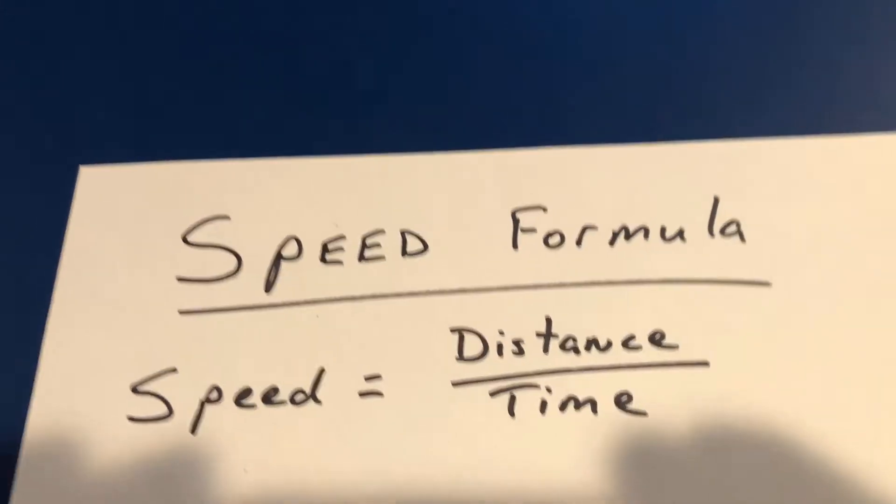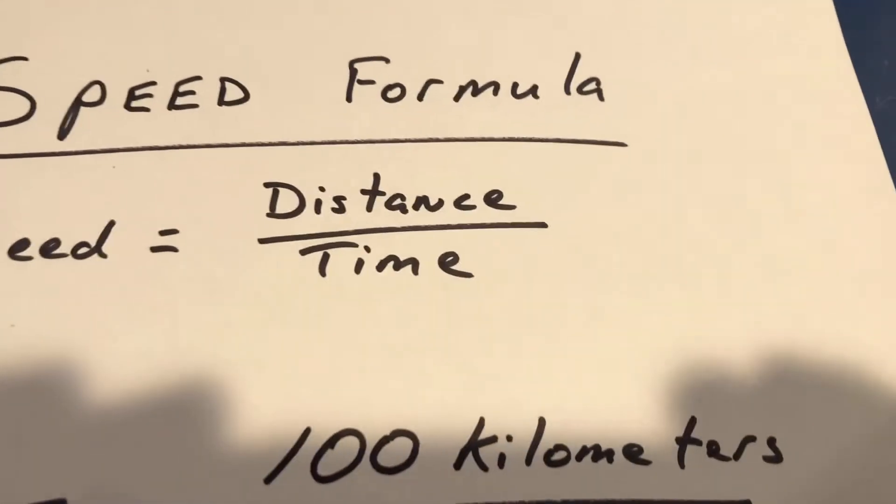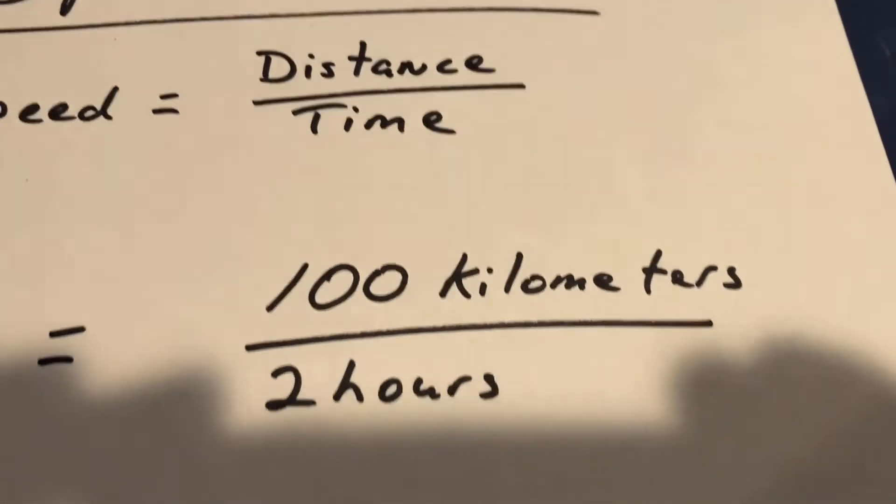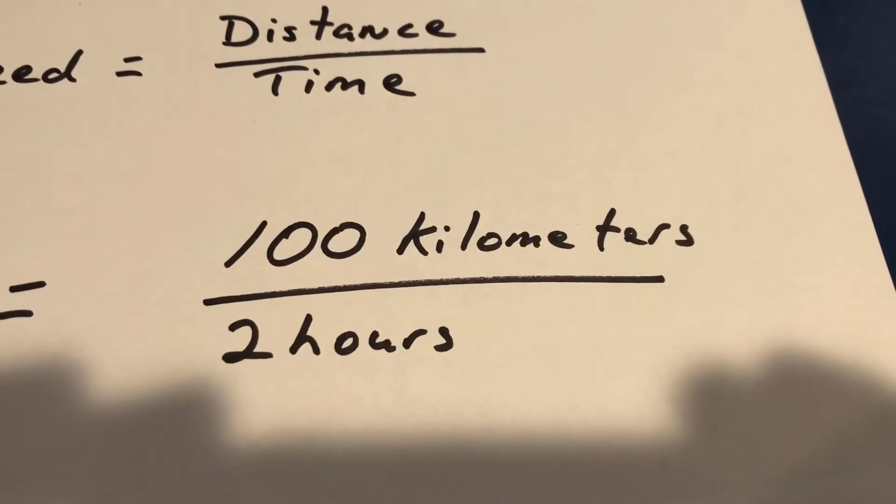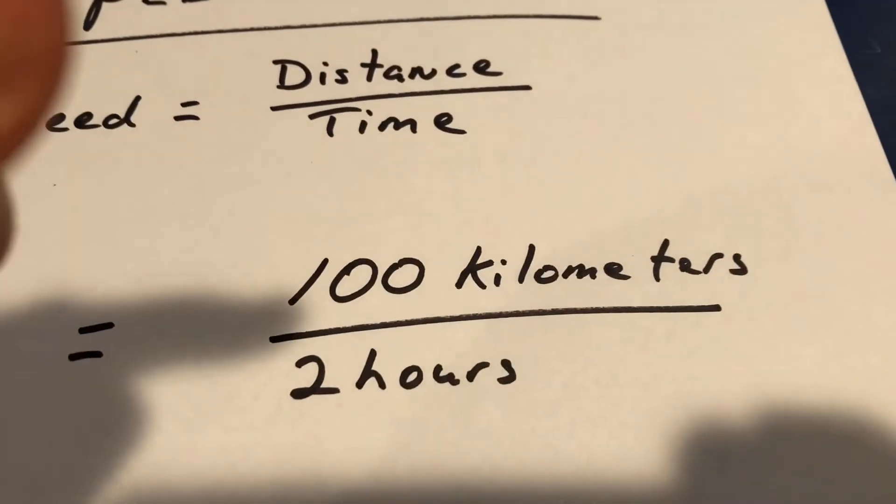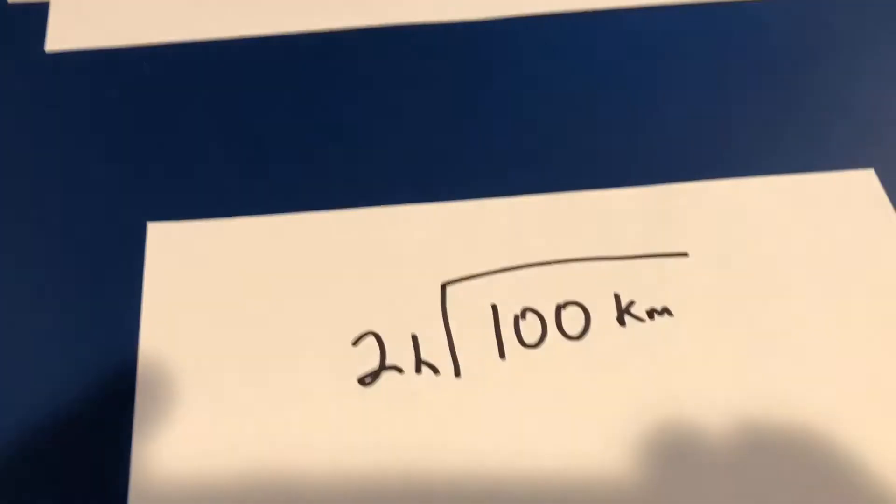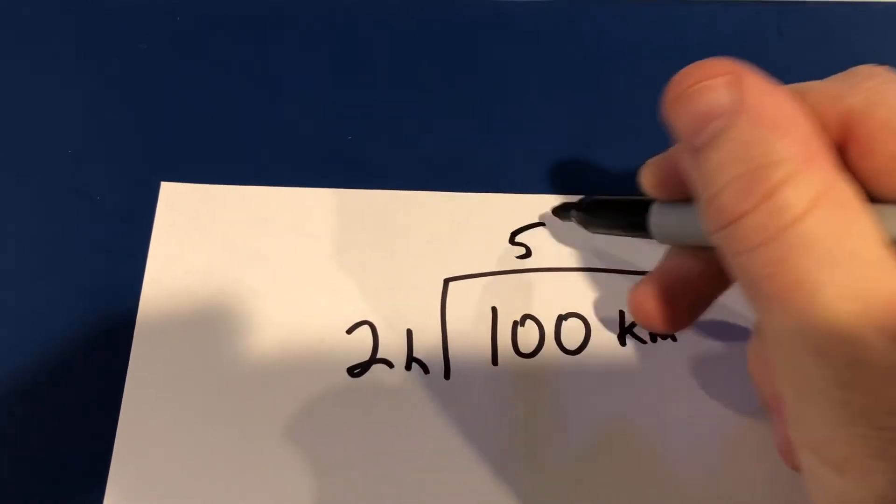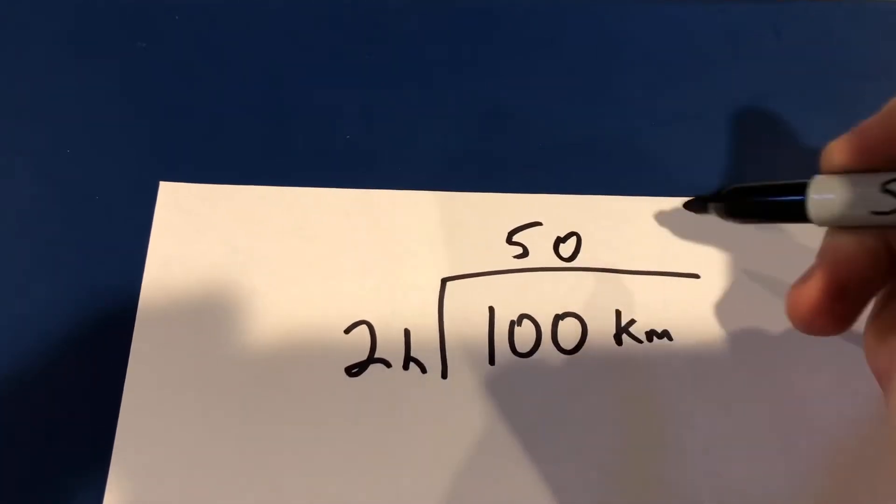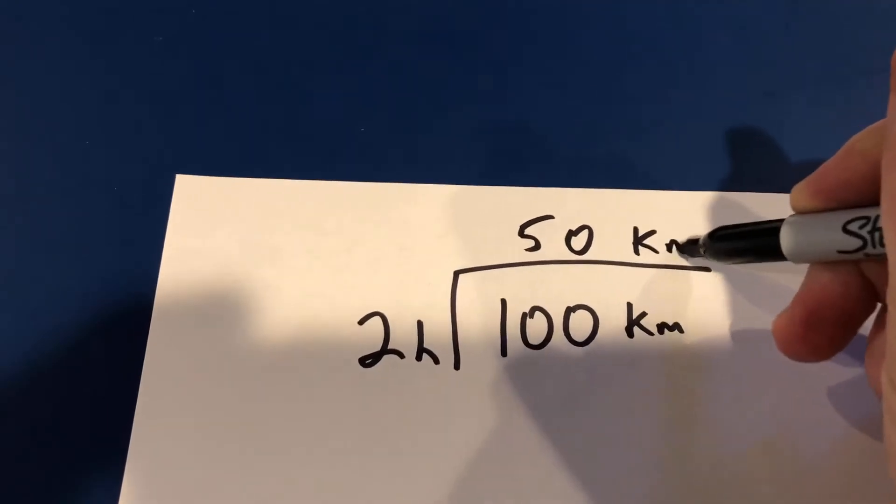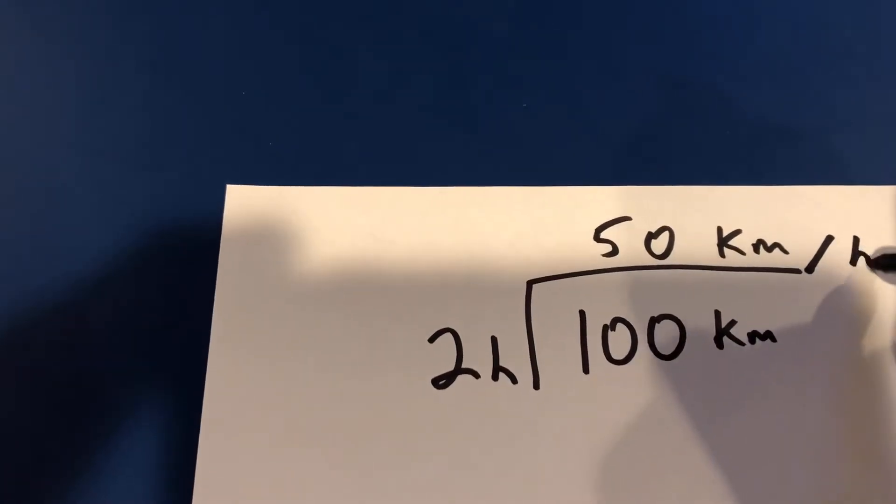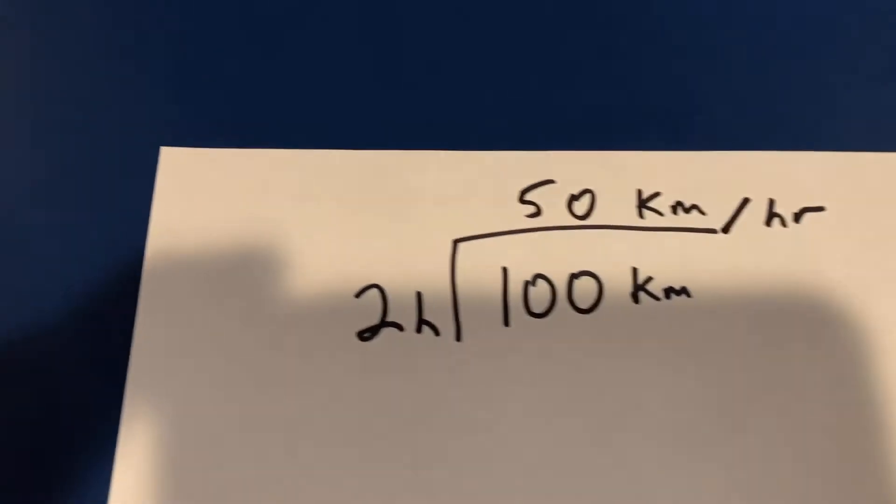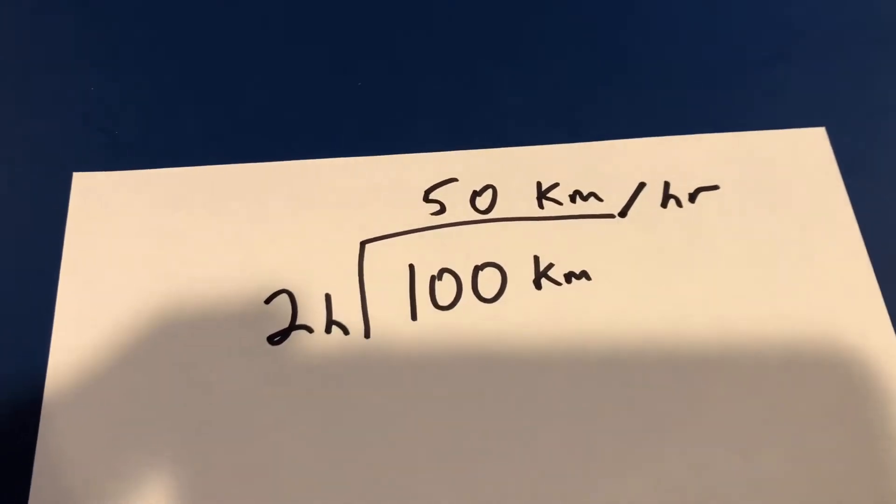So let's look at an example. Let's say I travel 100 kilometers in 2 hours. I just divide 100 by 2. 2 goes into 10 five times. No remainder. 50 kilometers per hour. That's the speed.